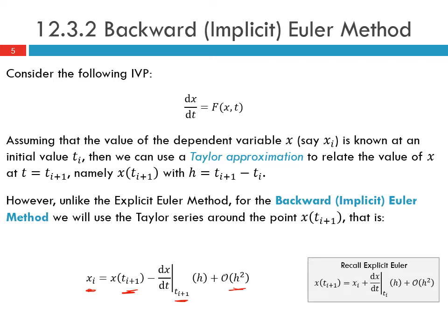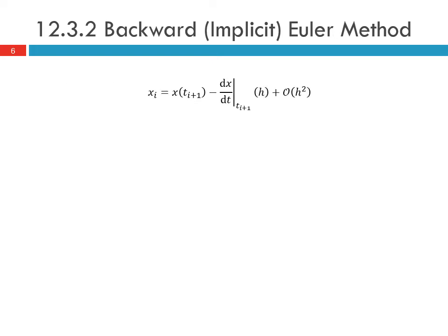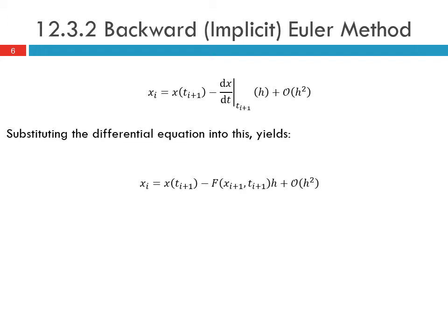Recall for the explicit Euler method, we were doing the Taylor approximation of x at ti+1 about the point ti: xi plus dx/dt evaluated at ti times h, and then our error term of order h squared. Writing our estimate here, we can substitute our differential equation into this, which yields: xi is equal to x at ti+1 plus f evaluated at xi+1 and ti+1 times h, plus order h squared.